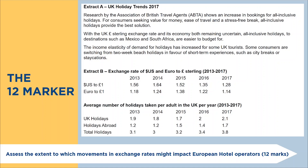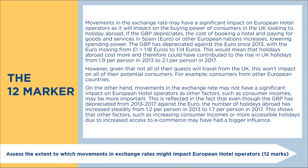Here's the 12 marker example: 'Assess the extent to which movements in exchange rates might impact on European hotel operators.' From the extract — which talks about increases in bookings and holidays, and an exchange rate table showing US dollars and euros to pounds sterling — this question is likely more based around the euro to pound sterling. Being able to interpret that data is really, really important. There is one thing missing from the example answer — I haven't got a conclusion yet, because I'm going to talk about conclusions shortly to compare a conclusion to a judgment. I'll demonstrate how I get my students to have those two paragraphs with that contrast plus the 'however.'